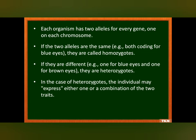Each organism has two alleles for every gene on each chromosome. If the two alleles are the same — for example, both code for blue eyes — they are called homozygous. But if they are different — one coding for blue eye and the other for brown eye — they are called heterozygous. In the case of heterozygotes, the individual may express either one or a combination of the two traits.